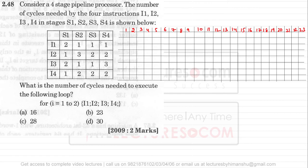Instruction I2 takes one clock cycle in S1, three clock cycles in S2, two clock cycles in S3, and four clock cycles in S4. Similarly, all these instructions are taking different clock cycles in different stages.